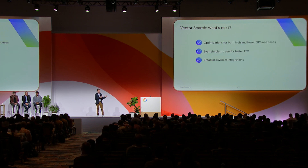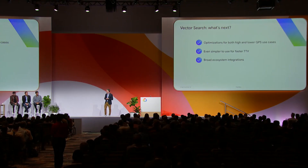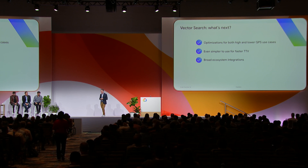What's next? We have a lot of features we're launching, but we're not done. You're going to continue hearing about optimizations for both high and low performance use cases. We'll be making Vertex AI Vector Search even simpler to use so you can get your applications up and running even faster, and you'll hear more about broad system integrations with Vertex AI Vector Search and other Vertex AI and GCP components. And now we'll hear from Arindam from Uber, to talk about the application they are building with Vector Search.